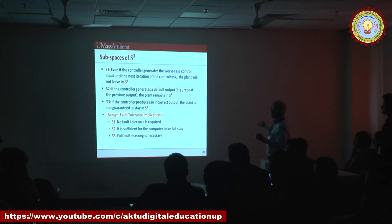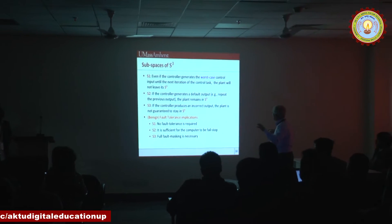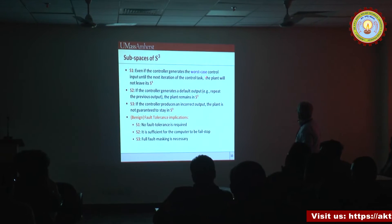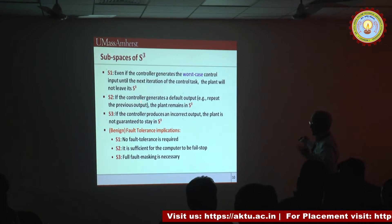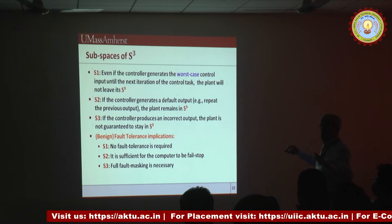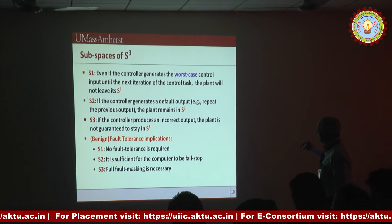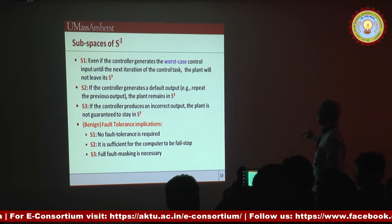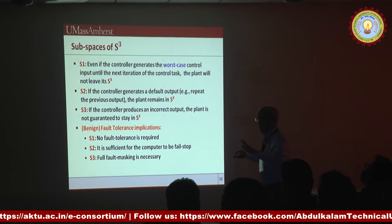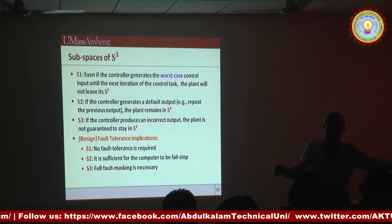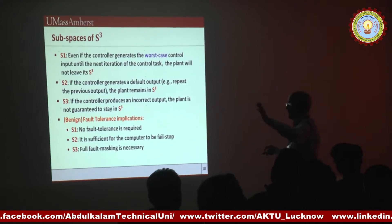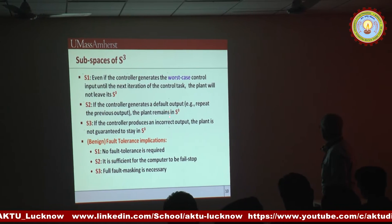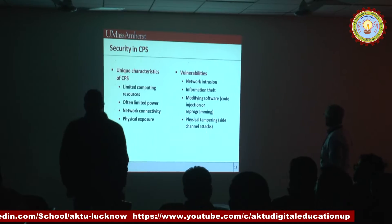Let's break down S-cubed into subspaces S1, S2, and S3. S1 is the innermost portion of the safe space — this is where it's completely safe, meaning even if you apply the worst-case control input for one iteration, the plant will not leave the safe space. S3 is where, if the controller produces an incorrect output, the plant is not guaranteed to stay safe — the pendulum can fall, the airplane can go down. S2 is where the controller generates a default output or side-channel attacks may apply.